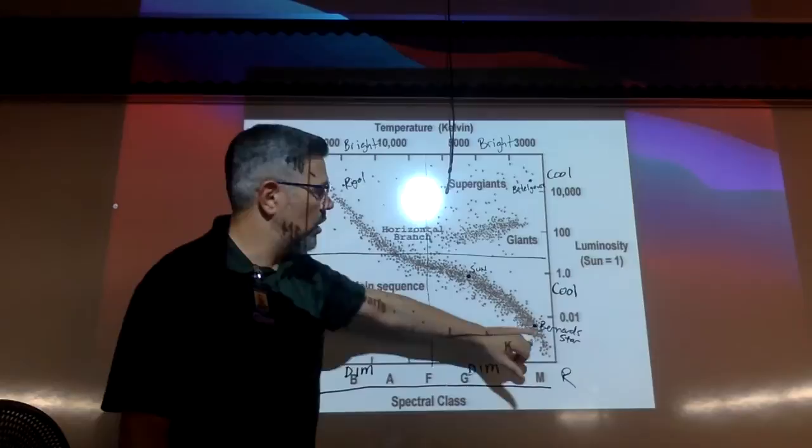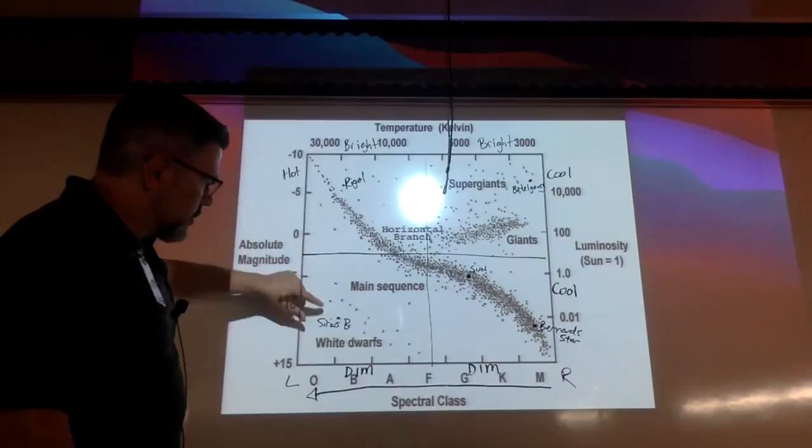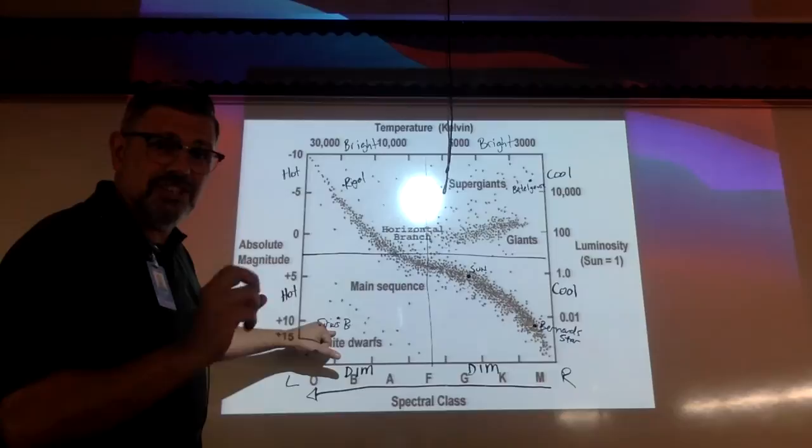And then we also have Bernard's star down here, which would be known as a cooler, dim star. A real hot star that is dim is Sirius B, and it's dim because it's small.